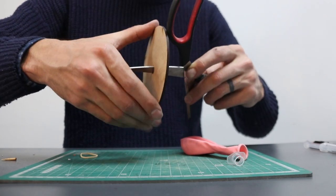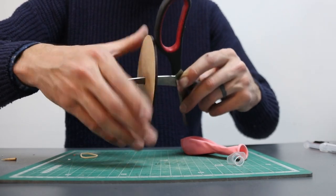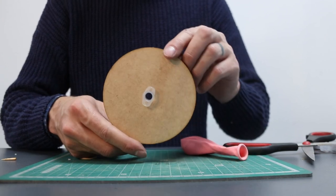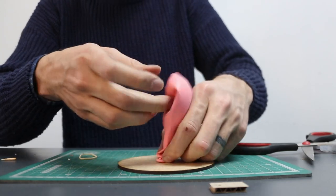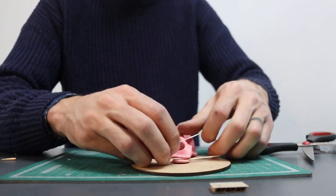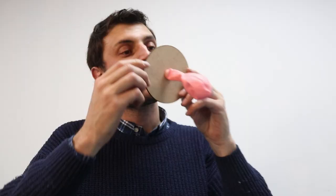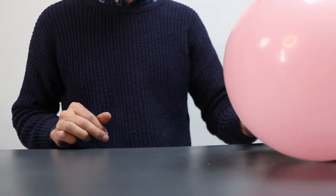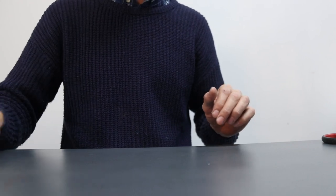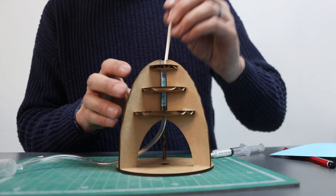Now take the balloon that's in your kit and tie it to the end of the syringe with an elastic band. Blow up your balloon from the other side and now you have a balloon-powered hovercraft. It does work best on a smooth, flat surface.